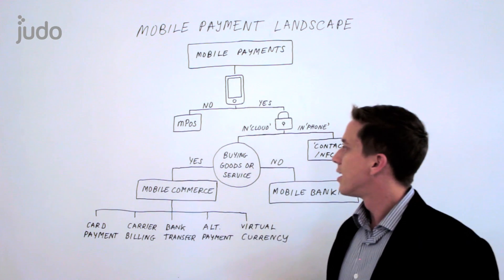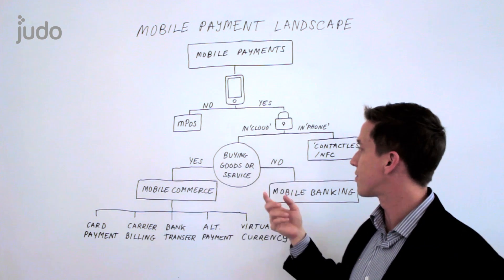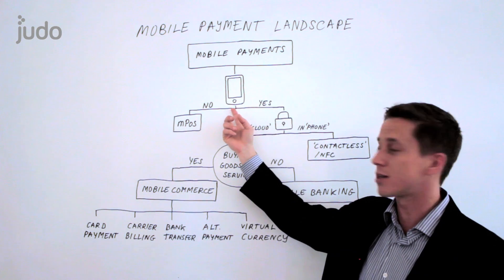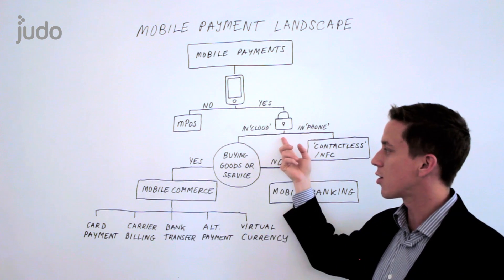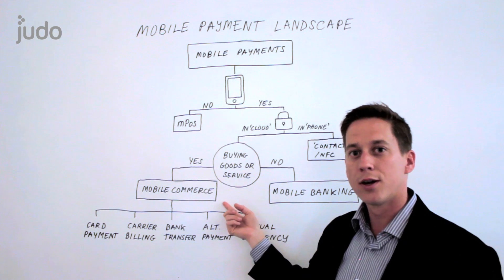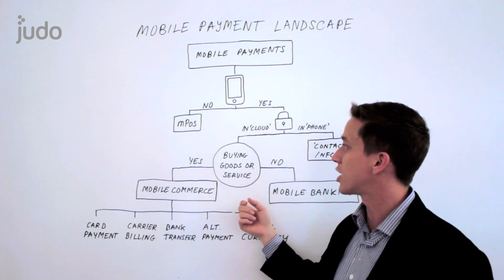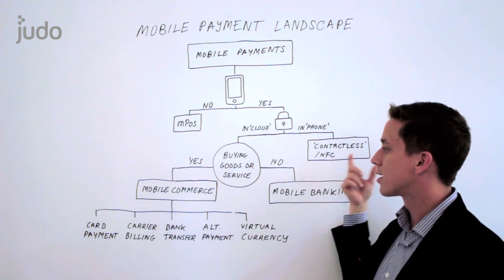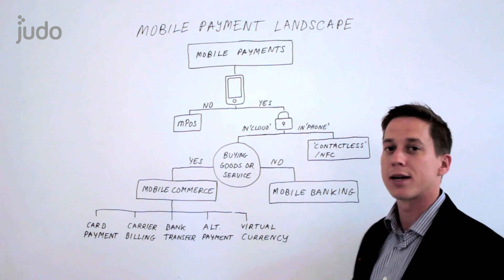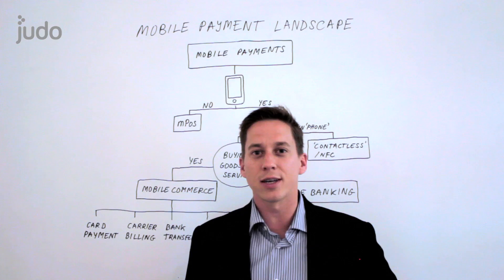So it's rather complex, but if you can remember to ask yourself these three simple questions — whose phone is being used, is it the consumer's? Where's the secure element? And are you buying a good or service? — you'll easily be able to differentiate between mobile point of sale, contactless, mobile commerce, and mobile banking. Thanks for joining. Look forward to seeing you next time.